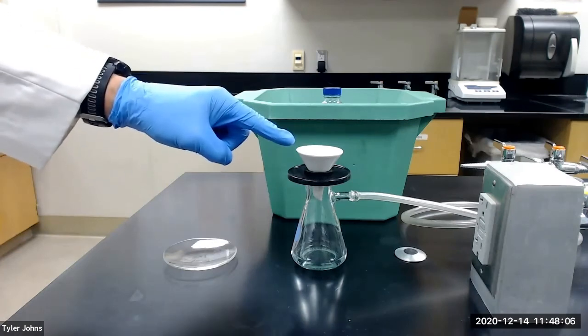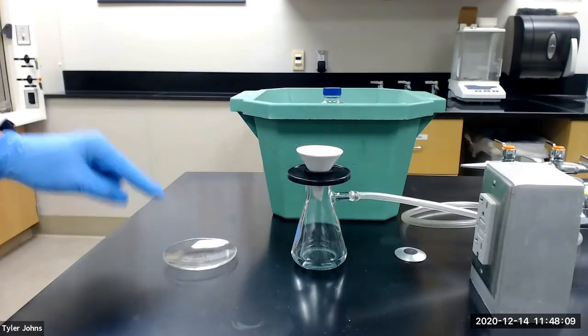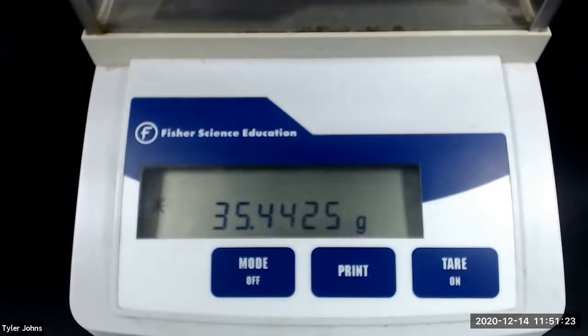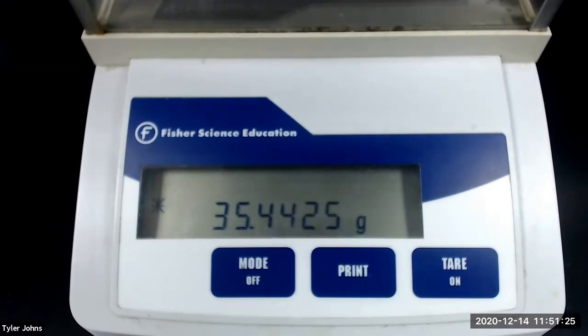While the benzylic acid continues to dry, we will pre-weigh a watch glass. This is 35.4425 grams.